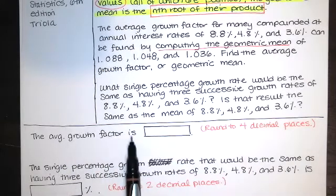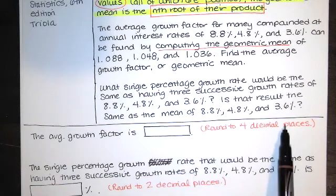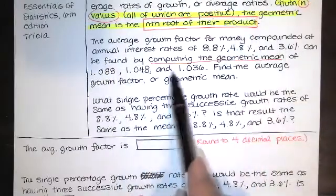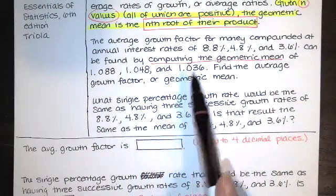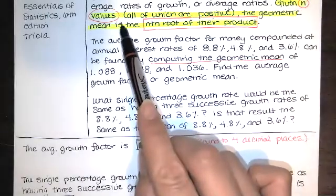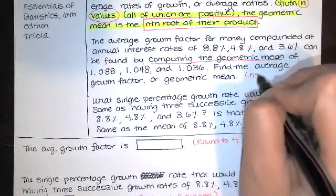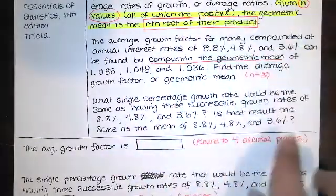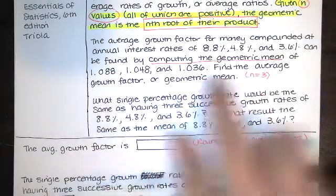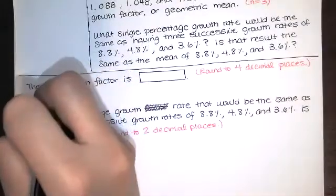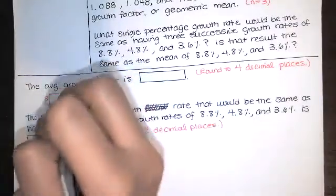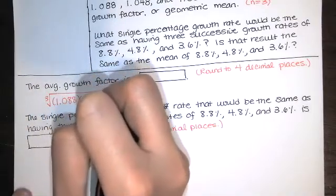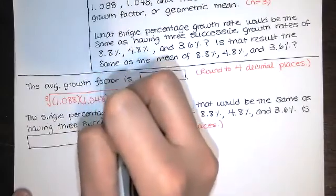This says the average growth factor is blank, and we're asked to round to four decimal places. So I've got three numbers, and I want the geometric mean of these three numbers. So I'm given three numbers, so n equals three, and the geometric mean is the nth root of their product. So we're going to take the third root of the product of these three numbers. So the answer is this, the third root of 1.088 times 1.048 times 1.036.